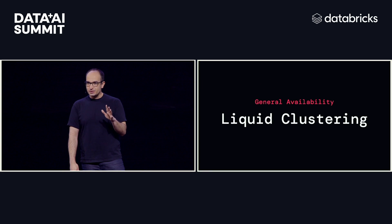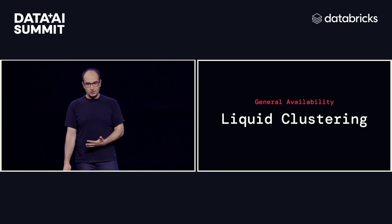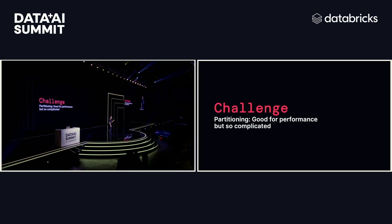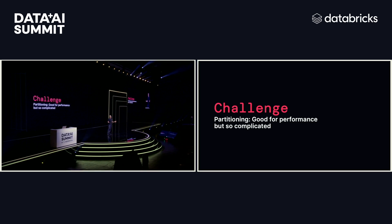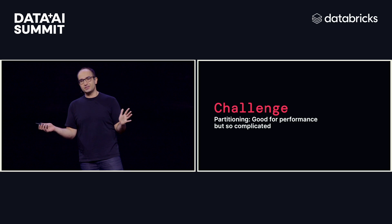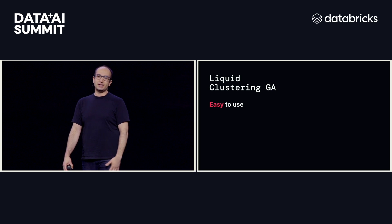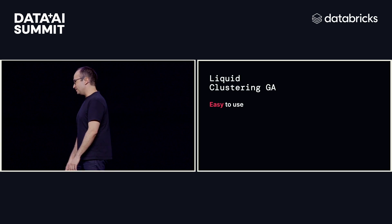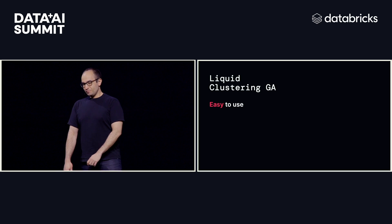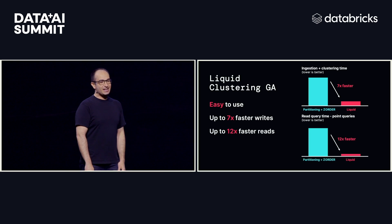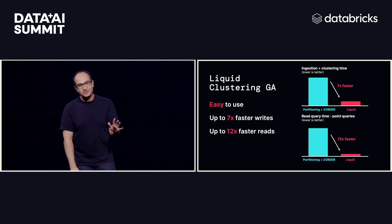Liquid clustering is generally available now as part of Delta 4.0. We really wanted to set out to solve this challenge that so many people have brought up: partitioning is good for performance, but it's so complicated. You get over-partitioning, small files, you pick the wrong thing — it's a pain to resolve. Liquid solves this with a novel data layout strategy that's so easy to use that we hope all of you will say goodbye to 'partitioned by.' You never need to say that again when you define a table. Not only is it easy to use, we found it is up to seven times faster for writes and 12x faster for reads. The performance benefits are amazing.